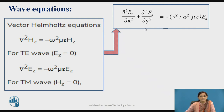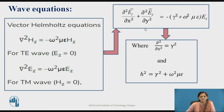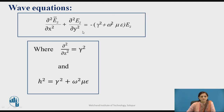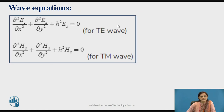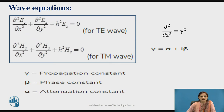Here, dou-by-dou-z-squared can be replaced by gamma-squared. The bracket containing all constant values can be replaced by a single constant H-squared. So if you know these two equations, by substituting H-squared you can get the equation for TE wave as well as for the TM wave. Here, dou-by-dou-z-squared equals gamma-squared, and gamma is the propagation constant given by alpha plus j-beta, where alpha is the attenuation constant and beta is the phase constant.